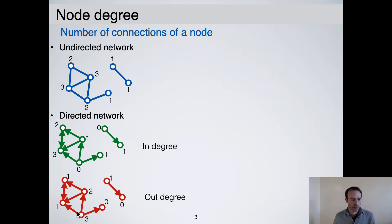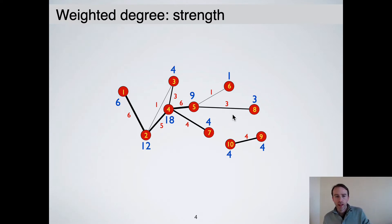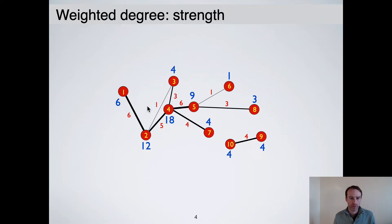This node has 3 outgoing edges and 0 incoming edges. Here is an illustration of weighted degrees — what I call the strength. It's very simple: if you have a node with degree 3, it has a strength of 12 because it's 6 plus 5 plus 1. This other node has only one connection with a weight of 6, so its strength is also 6.